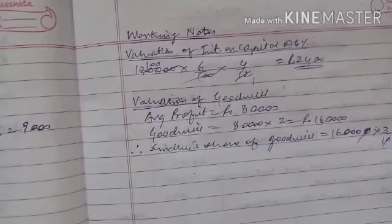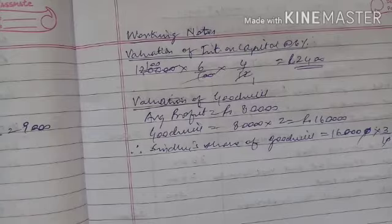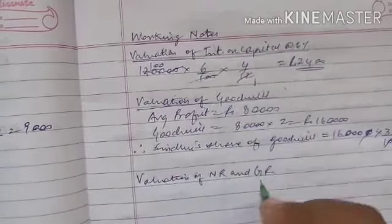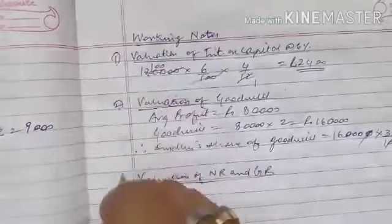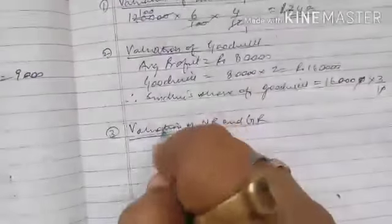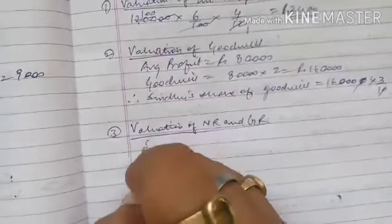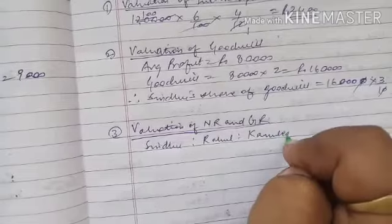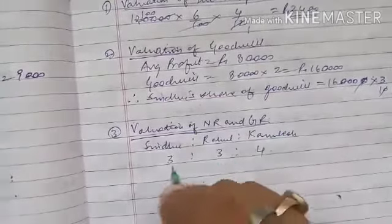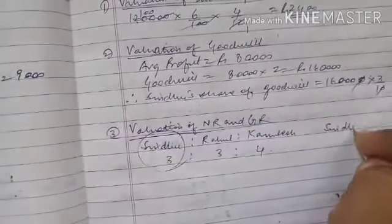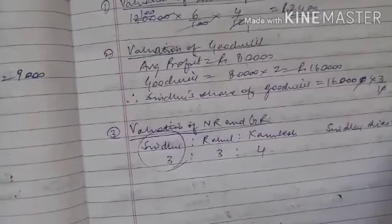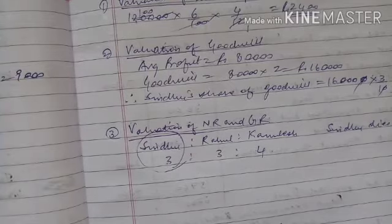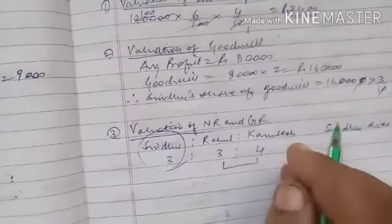Now what is the valuation of New Profit Sharing Ratio and Gaining Ratio? Valuation of NR and GR. This is first working, this is second working, this is third working. We have to show children working very clearly. So, ratio of Sindhu is to Rahul is to Kamlesh is 3:3:4. Sindhu dies. It is not mentioned in the question that share of Sindhu is distributed among the partners in any ratio. So 3:4 will be the new ratio and this same will be the gaining ratio.